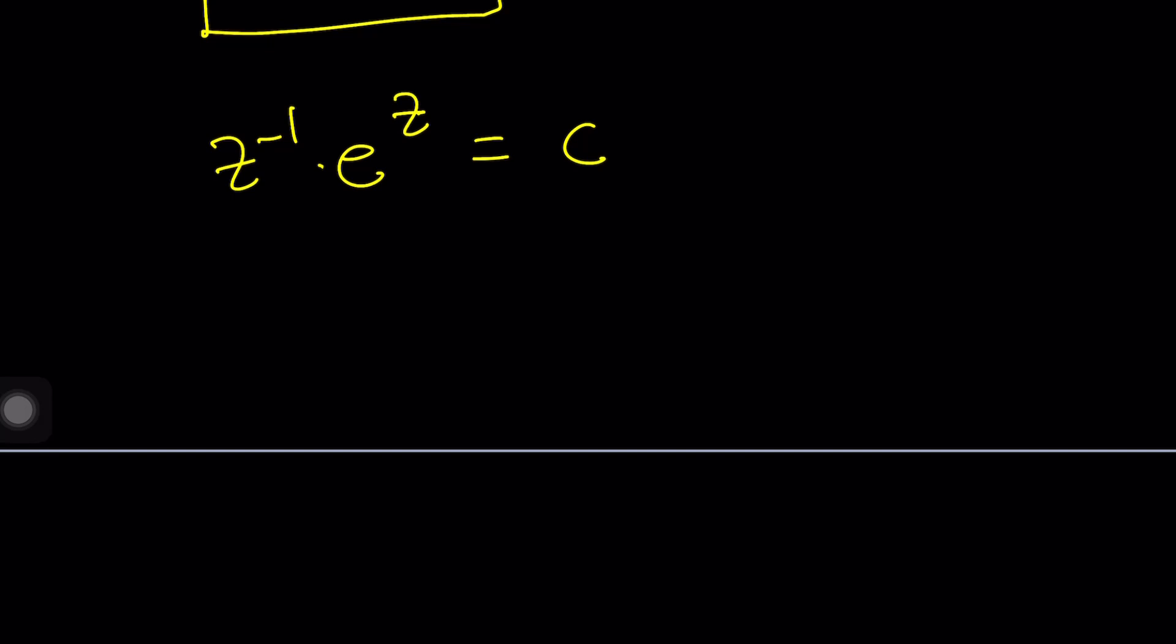Now, this one is kind of hard to work with. So, I'm going to go ahead and reciprocate both sides. And, that's going to give me Z times E to the power negative Z equals C to the power negative 1. And, you know what? I want to set that equal to K. Another constant because I'm trying to keep it simple. I hope it works.